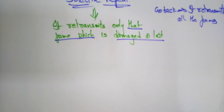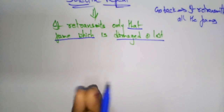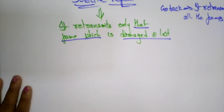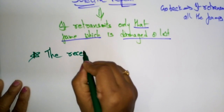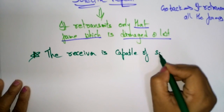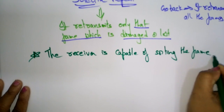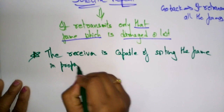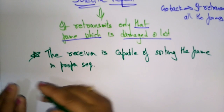The Selective Repeat protocol can perform some actions. First, the receiver is capable of sorting the frames in proper sequence. So whatever data is received by the receiver, the receiver is capable of sorting the frames in proper sequence.